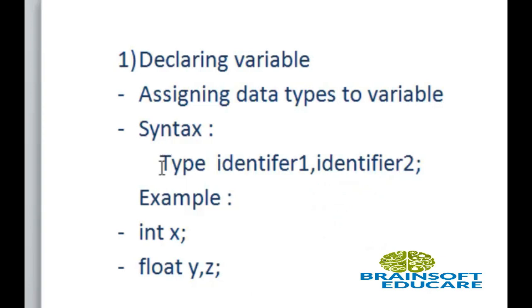Type represents the data type. Identifier 1 is variable name. You can create any number of variables simultaneously by using a comma in identifier.